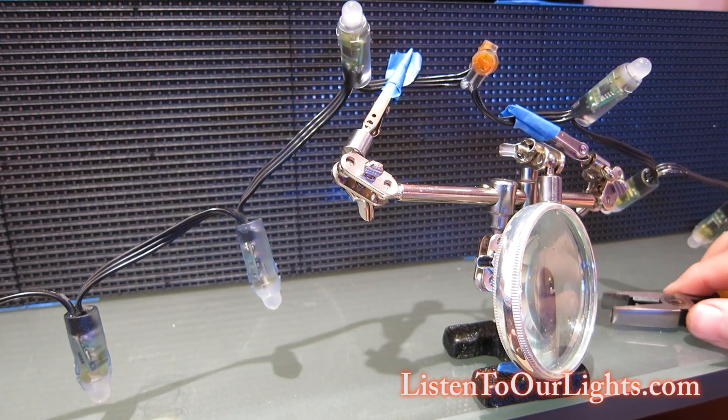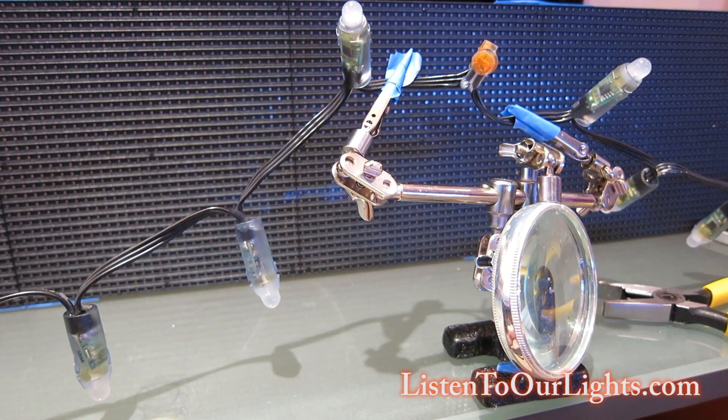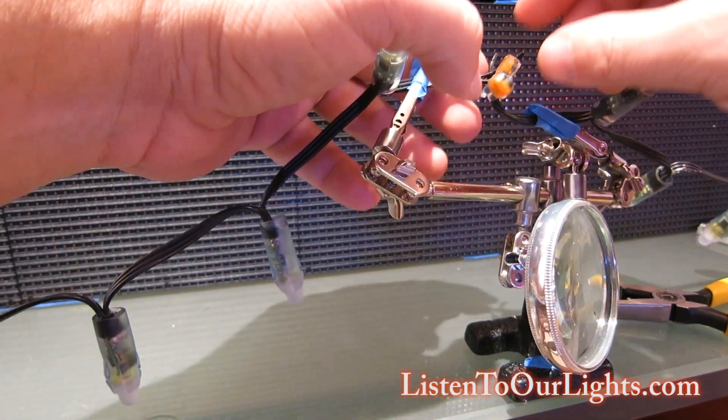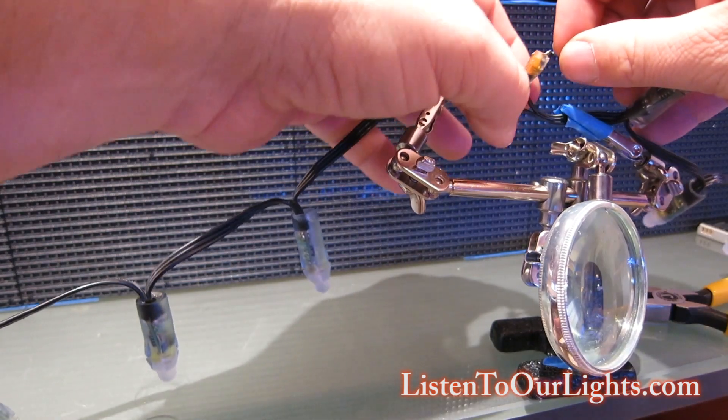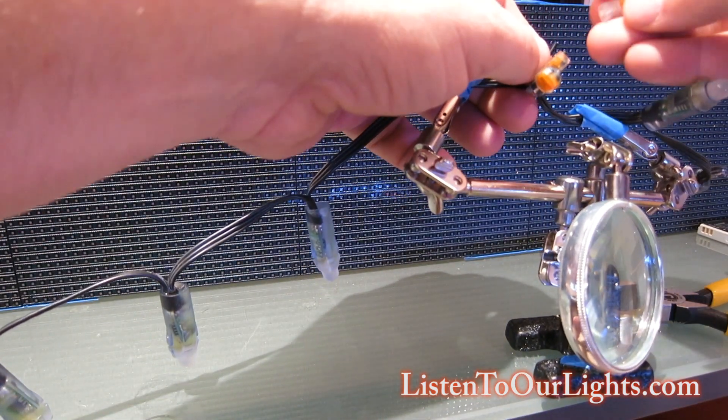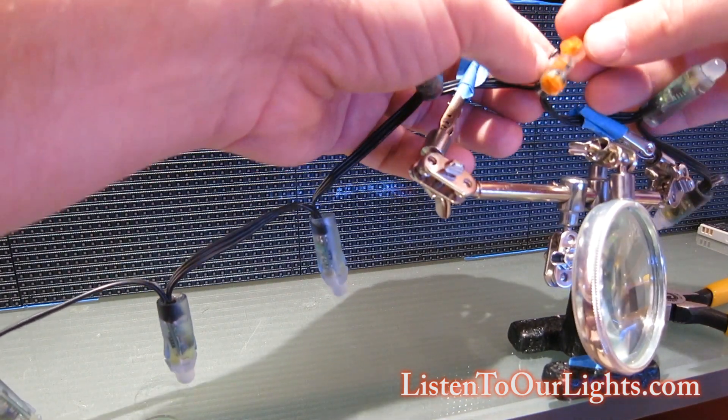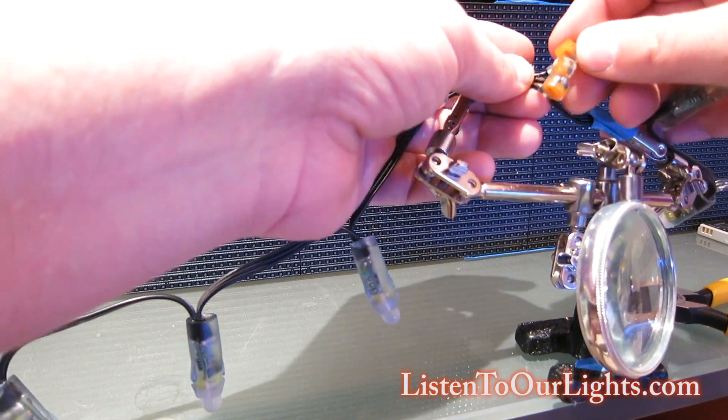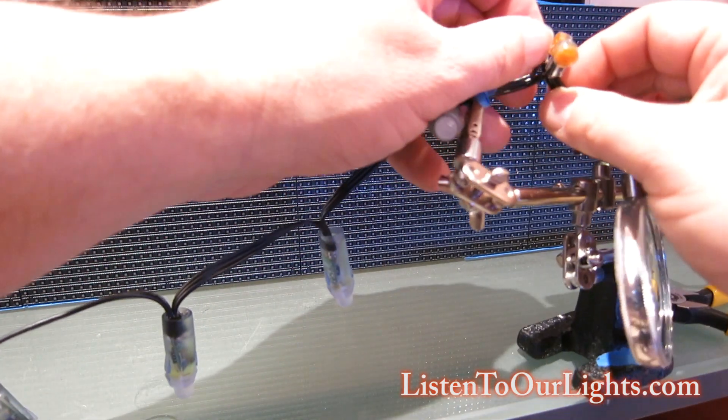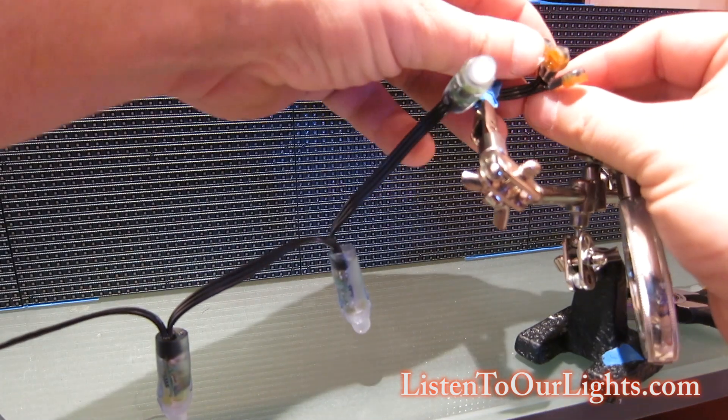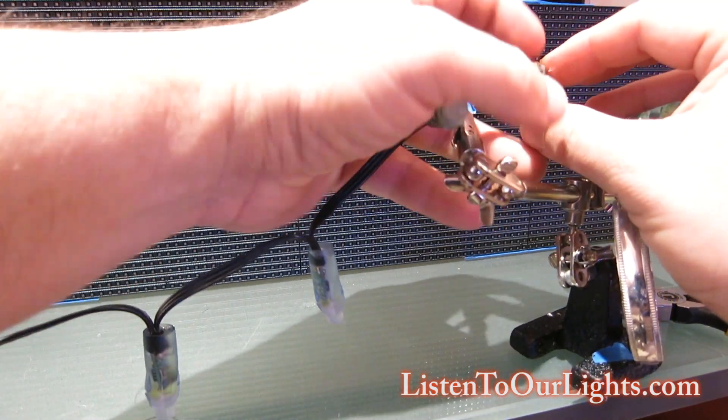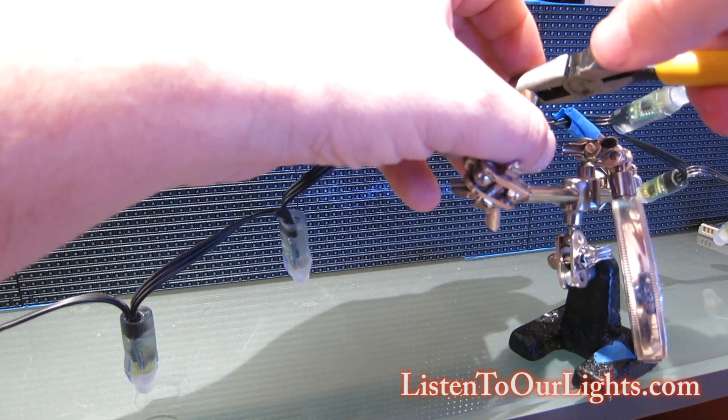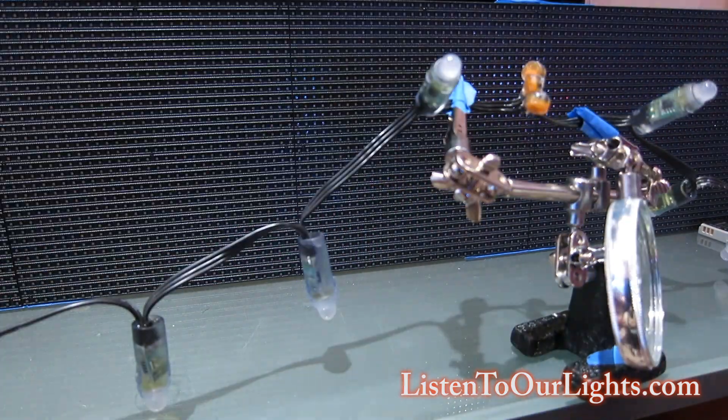Alright, and one more, this is for ground. Make sure they get all the way up there. Get the little crimper and it's a very satisfying feeling when they collapse, the little Scotch locks.